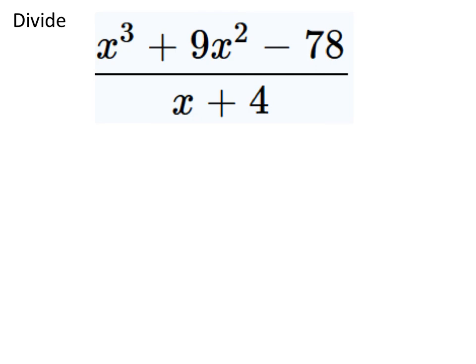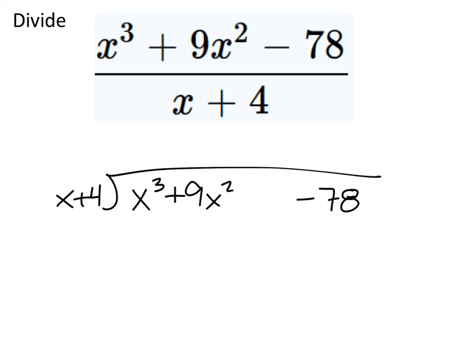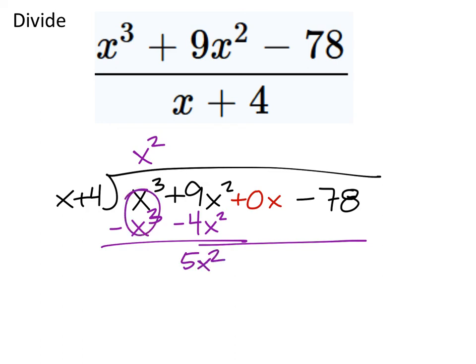Now this one is a unique scenario because it is in descending order, our numerator, but it is missing that x to the 1th power term, which I will need to write, but with a coefficient of 0. So if I had just written it out, this is what it would look like. I've given myself some space so that I can put that 0x right there. Now this is pretty crucial because then it gives us some place to put like terms if we need to. Starting this out, how many x's go into x cubed? x squareds of them do.